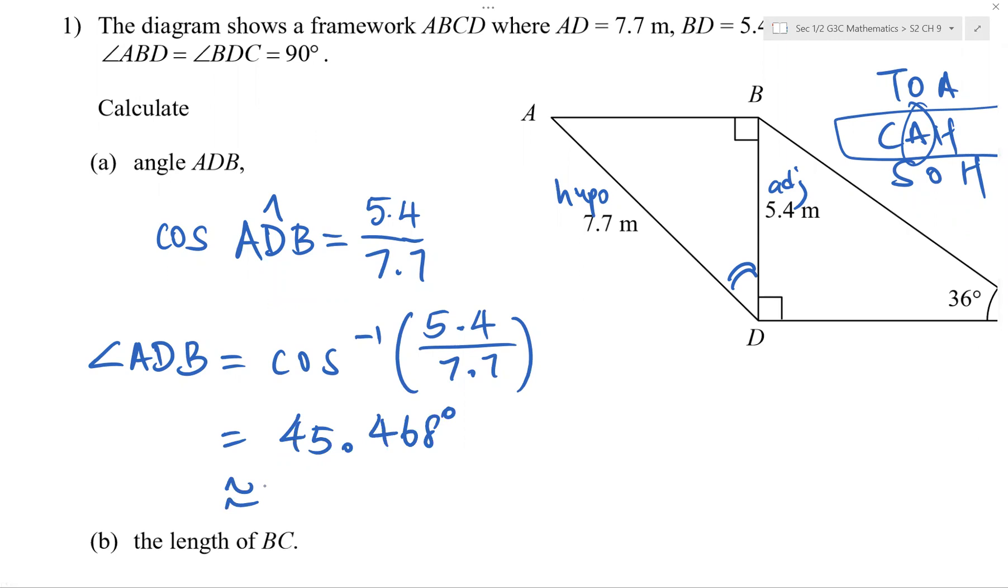All your life, we've been telling you, if it's not exact, put it as 3SF. However, for degrees, you leave it to 1DP.